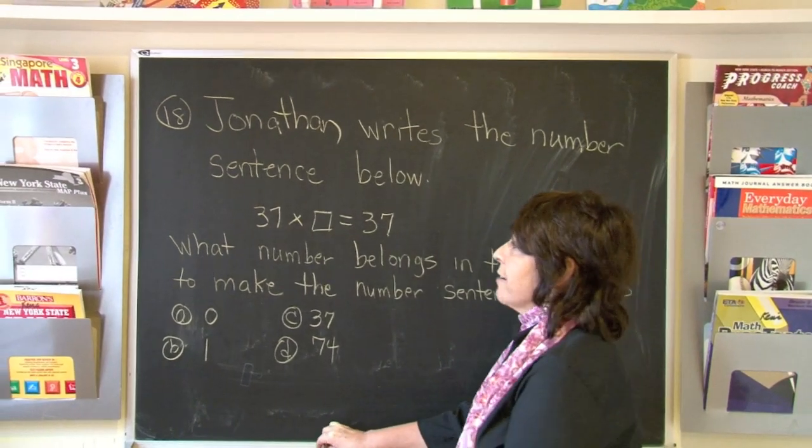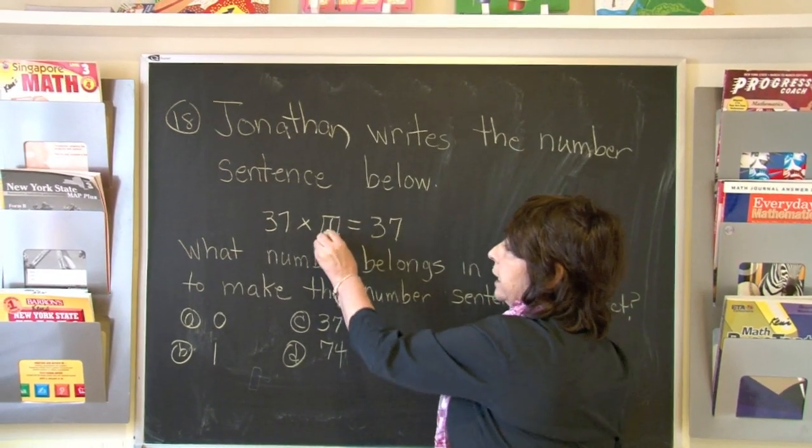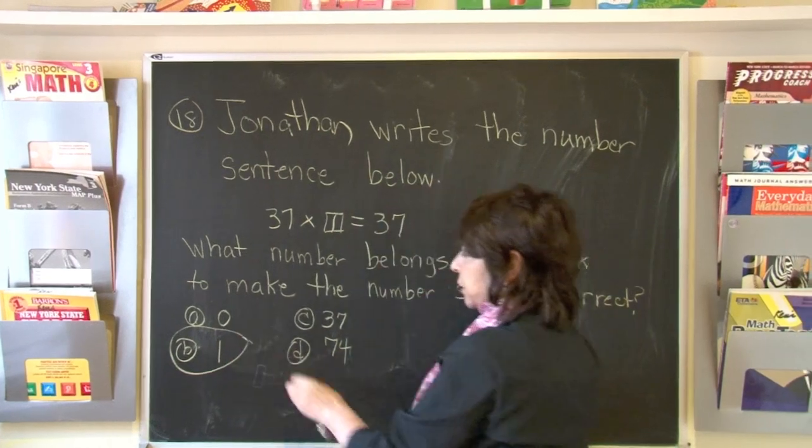So 37 times one is 37. The correct answer is B.